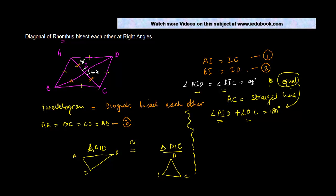So, let us see how this is working out. In these two triangles, we know for sure that AI is equal to IC. Why? We have proved this at equation 1 for the reason highlighted there. Because diagonals of a parallelogram bisect each other.